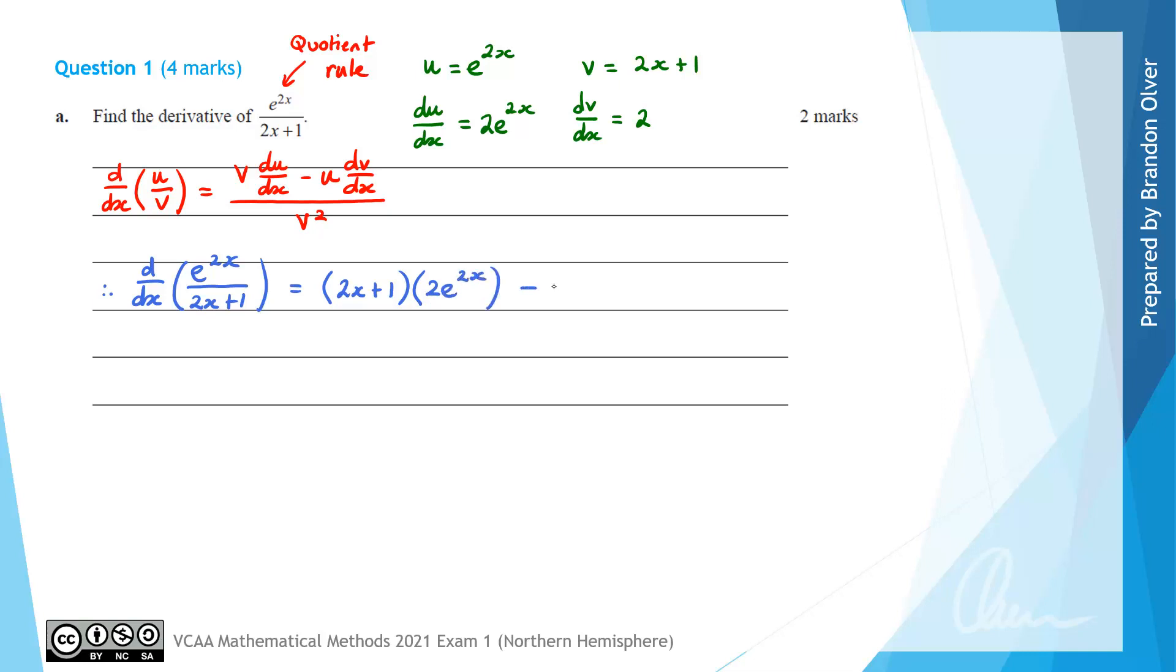Then we subtract away from that u, which is e^(2x), multiplied by dv/dx, which is 2. That is then divided by v squared. So in a set of brackets, we'll need (2x + 1) squared on the bottom line of that fraction. And now that is a suitable answer for this question. That is the derivative of e^(2x) divided by (2x + 1).